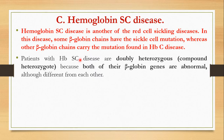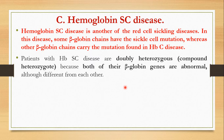Patients with HbSC disease are compound heterozygotes. This means their hemoglobin will be HbS and HbC. In terms of genotype notation, we write it as HbS/HbC. While the normal adult hemoglobin (HbA/HbA) is written as HbA/HbA.